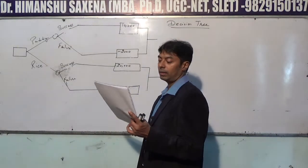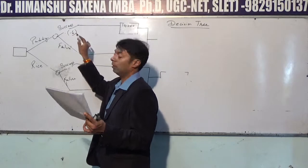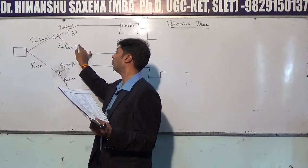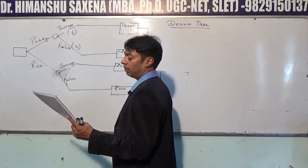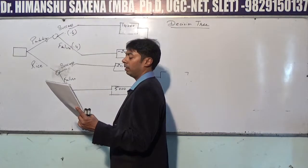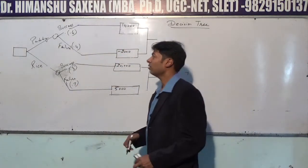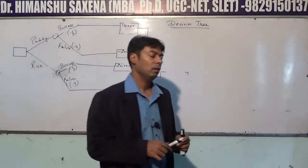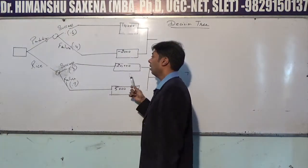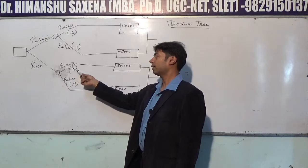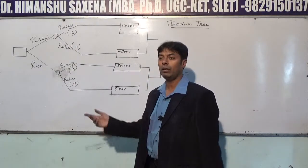The probability of success for paddy is 0.6, so the probability of failure is 0.4. For rice, the probability of success is 0.3, so the probability of failure is 0.7. The difference from the previous problem is that here we have one profit and one loss value instead of two profits.